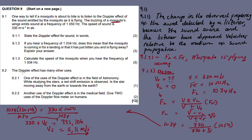Question 9.2: The Doppler effect has many other uses. Question 9.2.1: One of the uses of the Doppler effect is in the field of astronomy. While studying the stars, a redshift emission is observed. Is the star moving away from the Earth or towards the Earth?